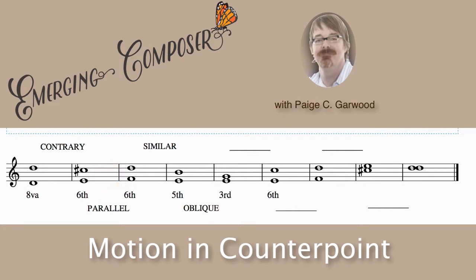The next motion is similar motion. Similar is where both notes move in the same direction, but they start at one interval and go to a different interval. In this case, we're starting from a sixth — F to D — and going to E to B, which is a fifth. E, F, G, A, B. Sixth to a fifth — similar motion going the same direction but arriving at a different interval distance.